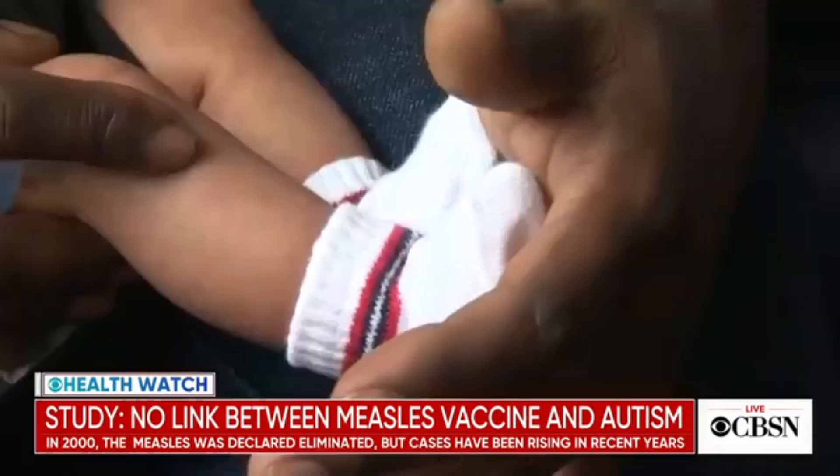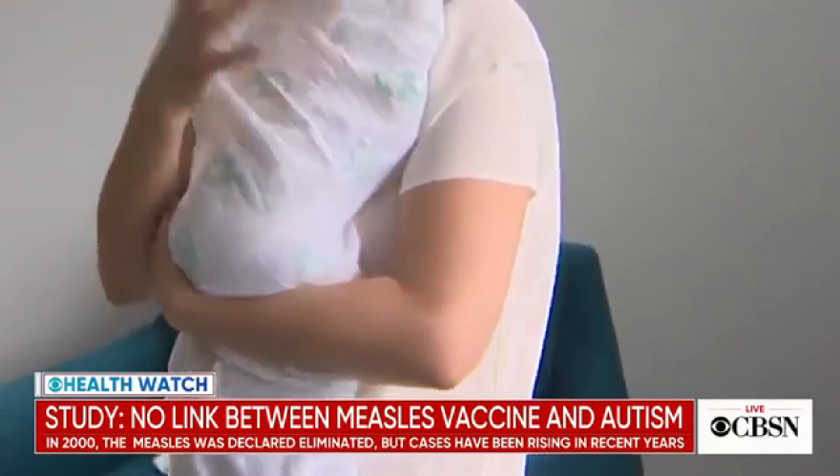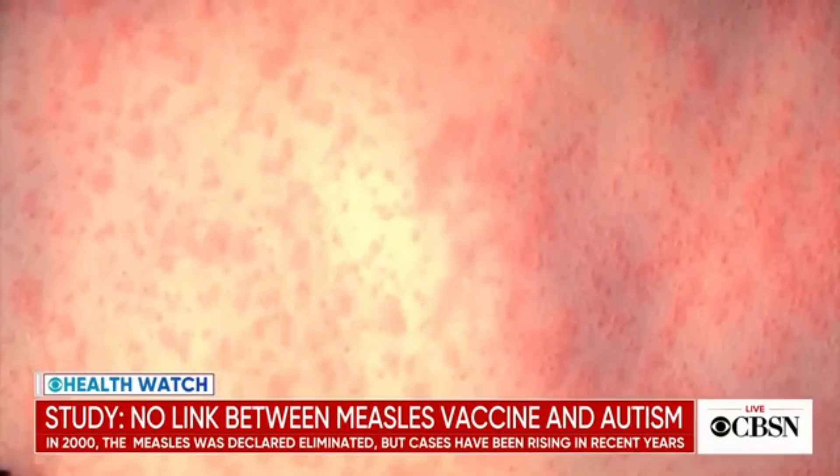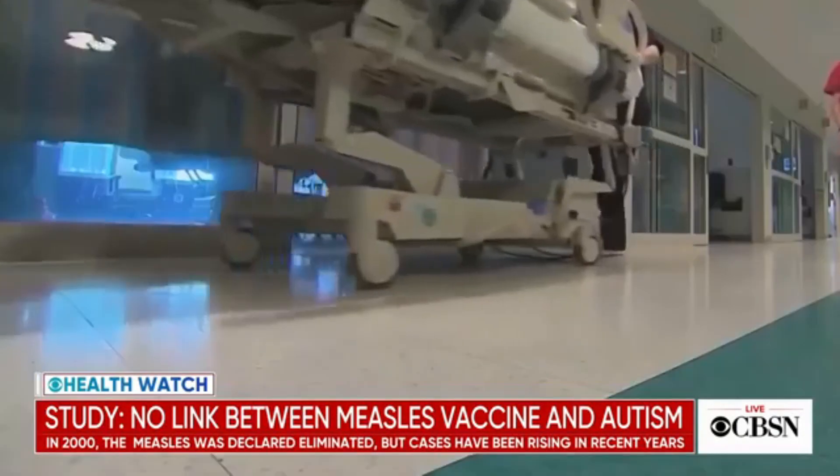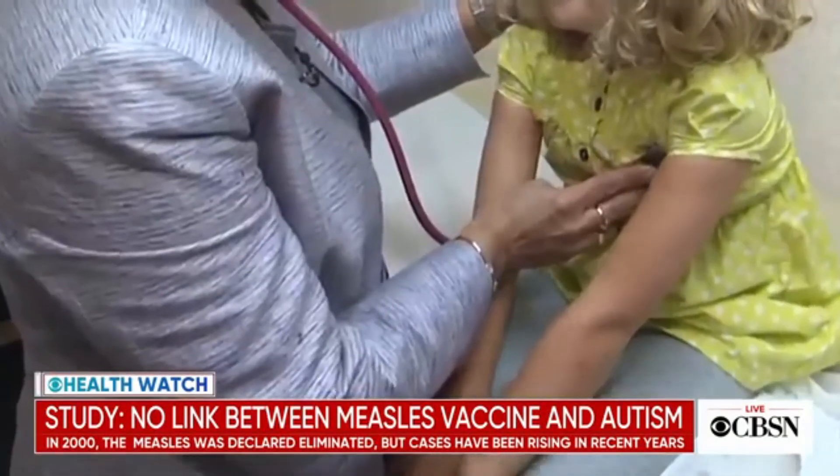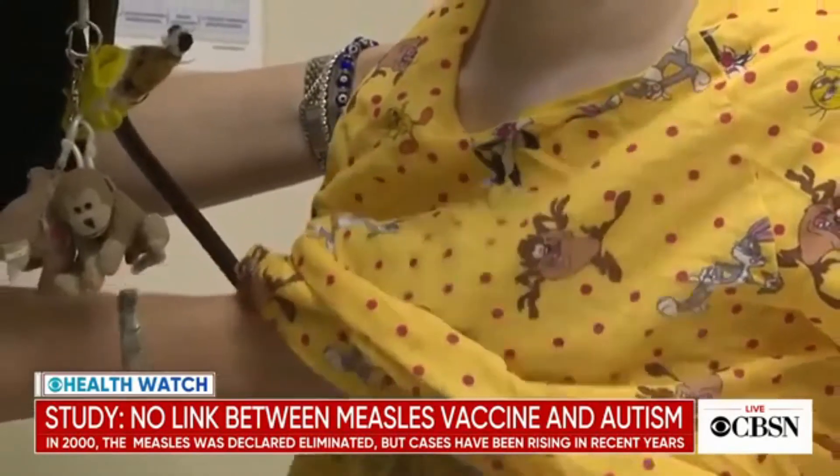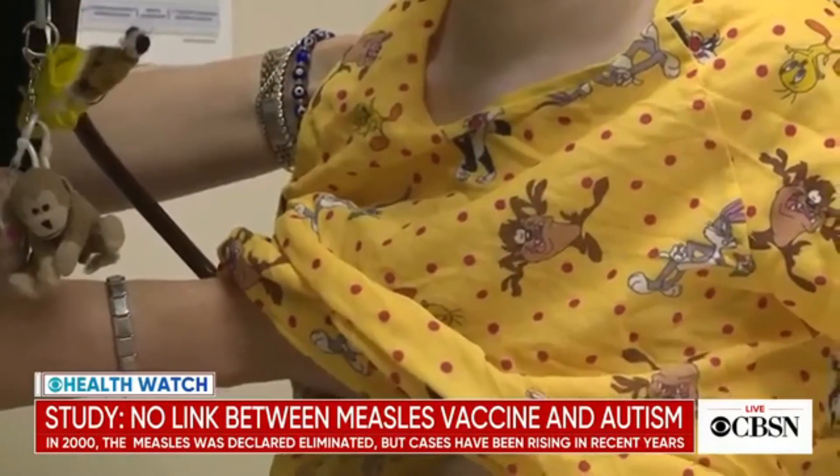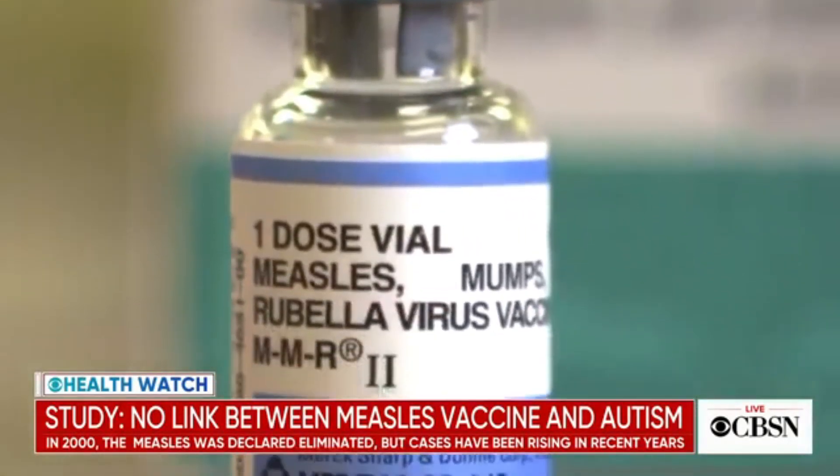Since 2003, there have been nine CDC-funded or conducted studies that have found no link between thimerosal-containing vaccines and autism, as well as no link between measles, mumps, and rubella vaccine and autism in children. Currently, the only childhood vaccines that contain thimerosal are flu vaccines packaged in multidose vials.